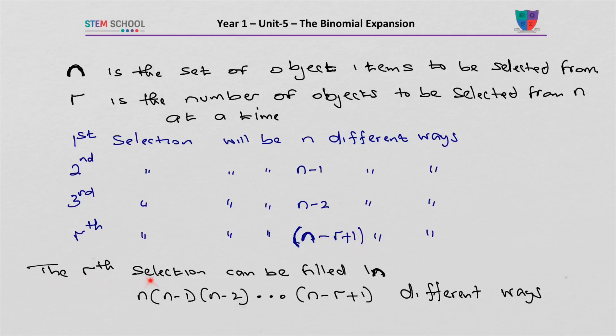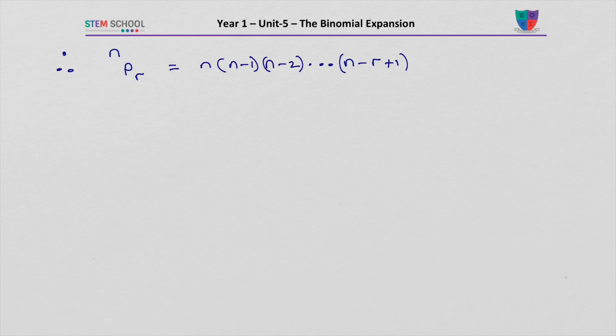The rth selection or place can be filled in, you get n, n minus 1 times n minus 2, all the way to n minus r plus 1 different ways. Therefore, n permutation r will be n times n minus 1 times n minus 2, all the way to n minus r plus 1.